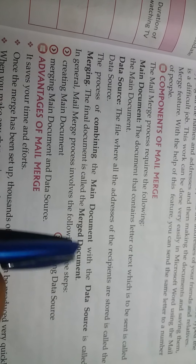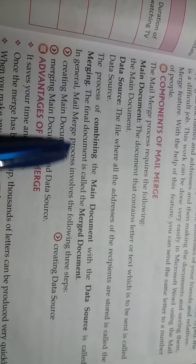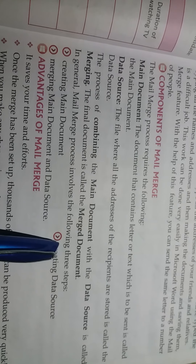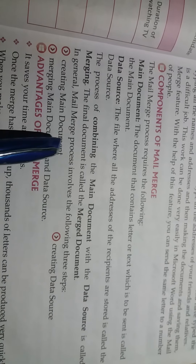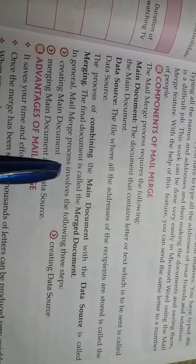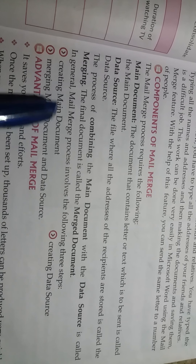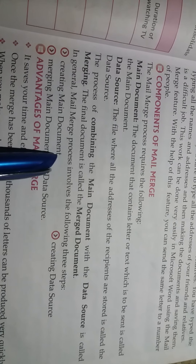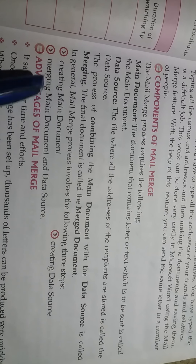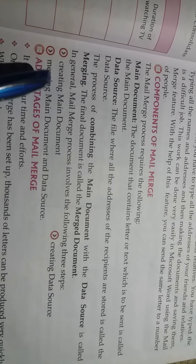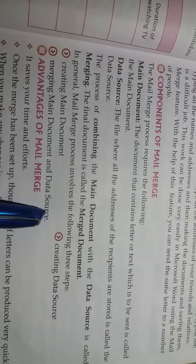In general, the mail merge process involves the following three steps: first, creating the main document; second, creating the data source; third, merging the main document and data source.